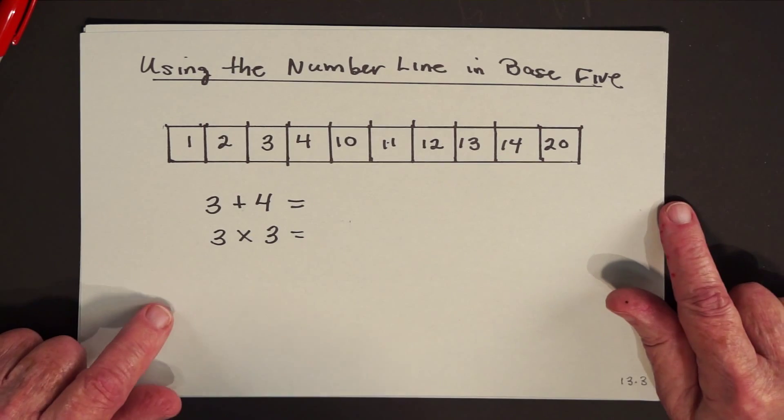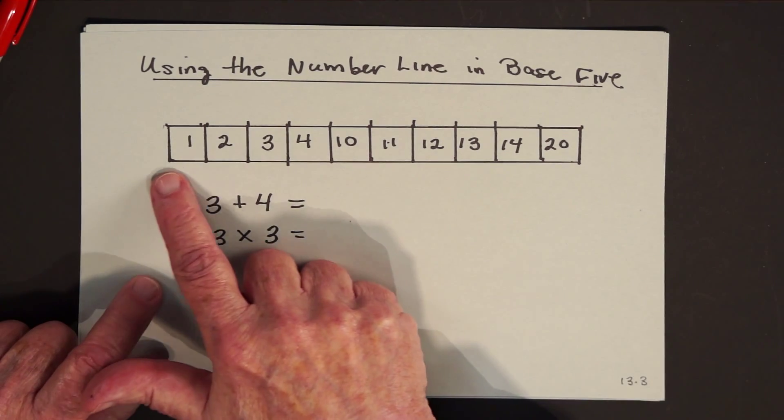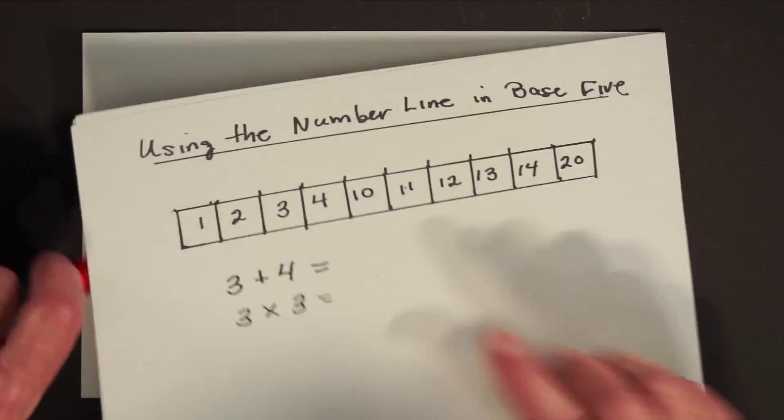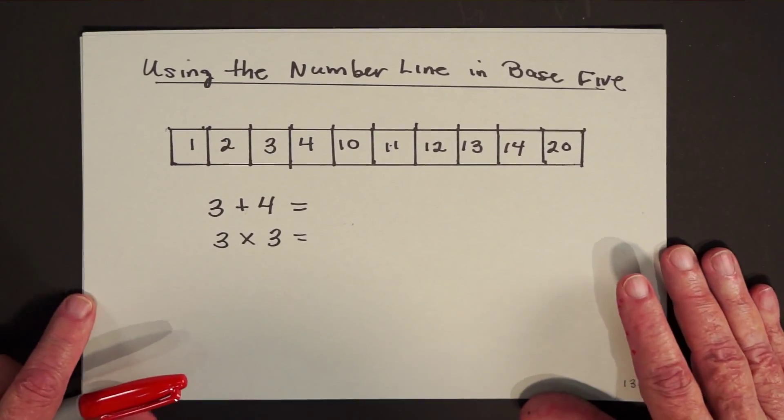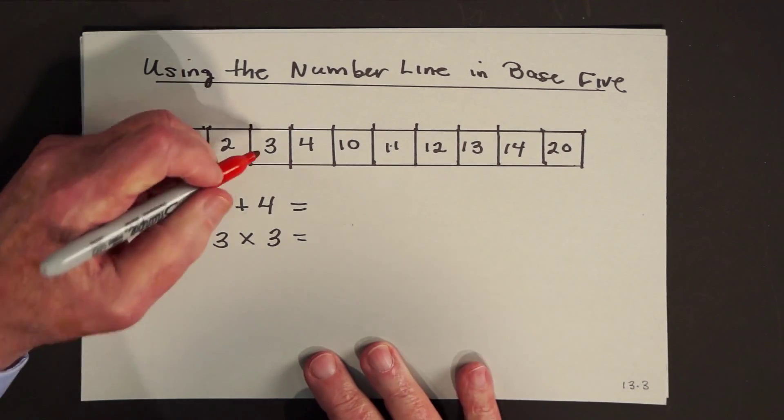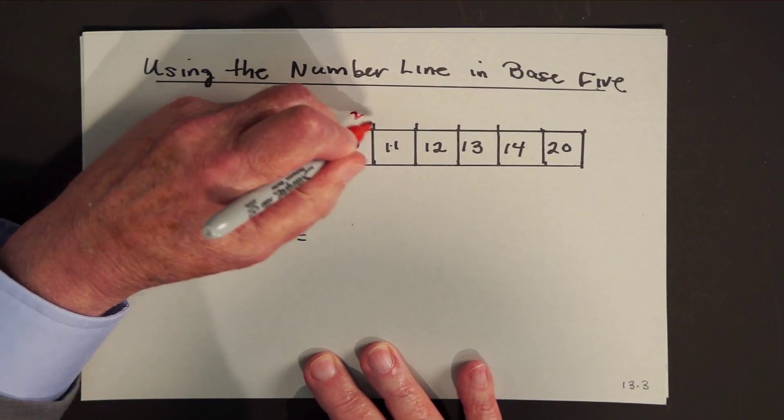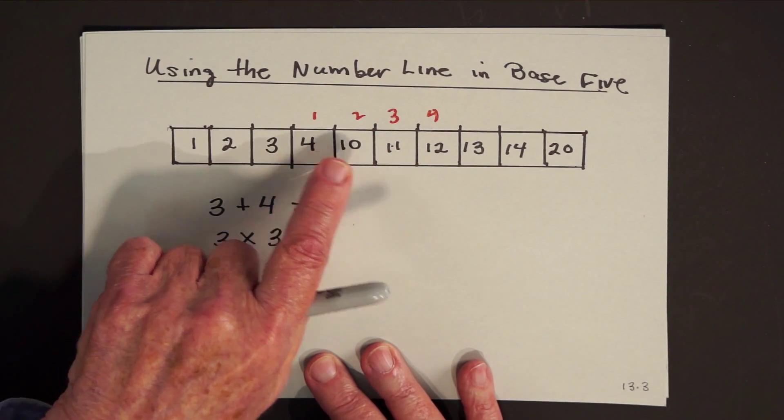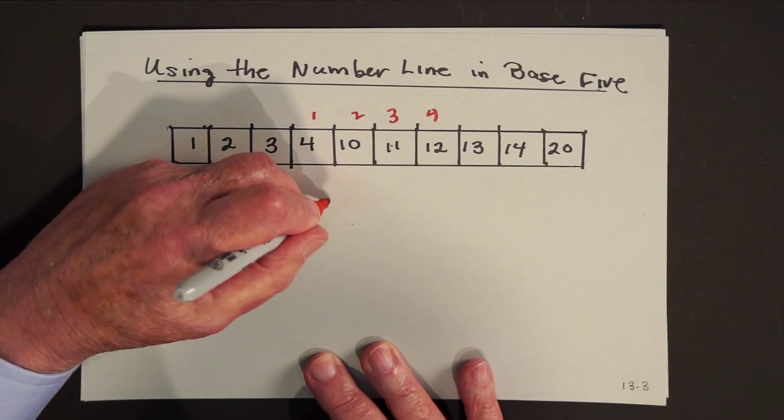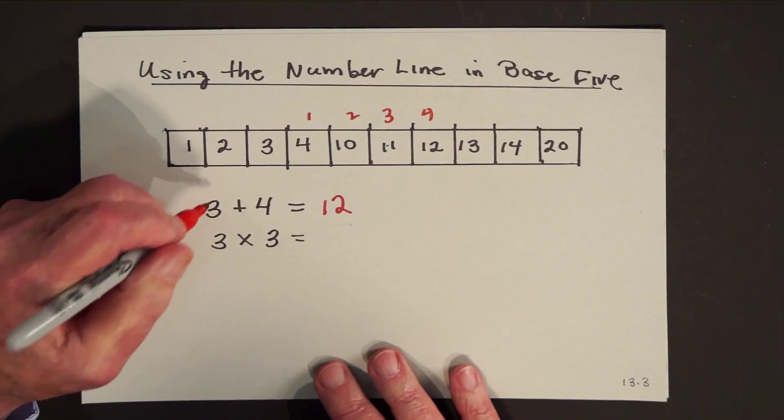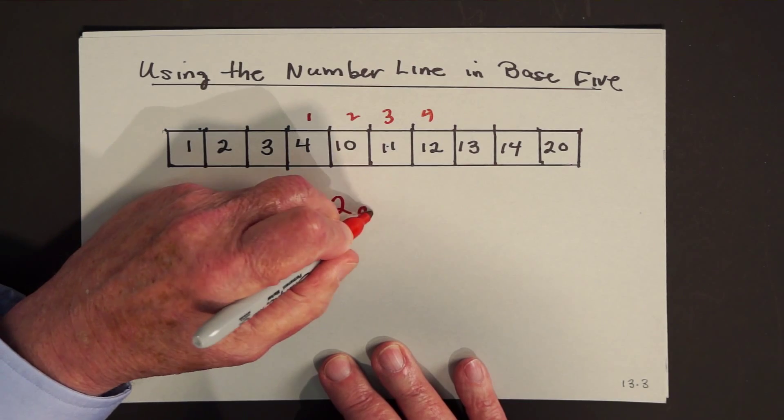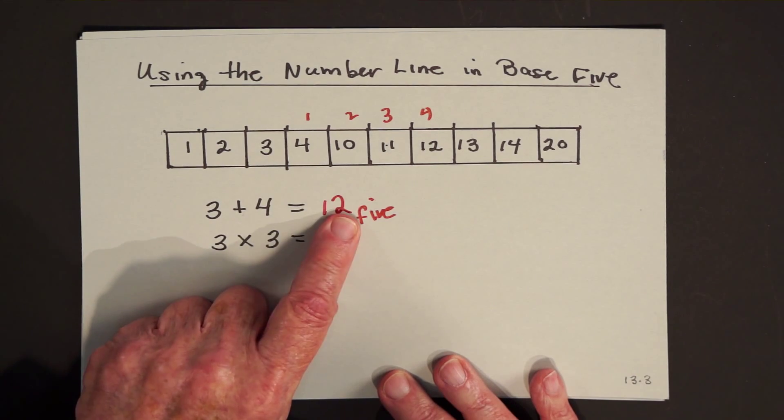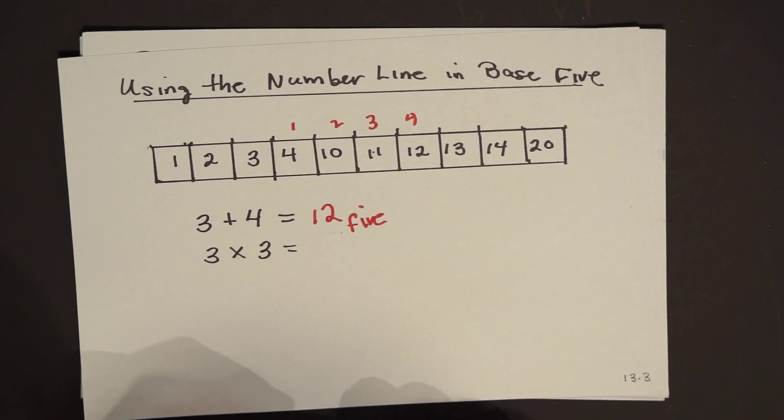So in the same way that we learned to count, the youngster in base five would learn the same way. Only his numeral system would be different. And if you said to him, how much is three plus four? He would say, well, I have three and now I'll add on four more. See, he's walking the number line. One over, two over, three over, four over.